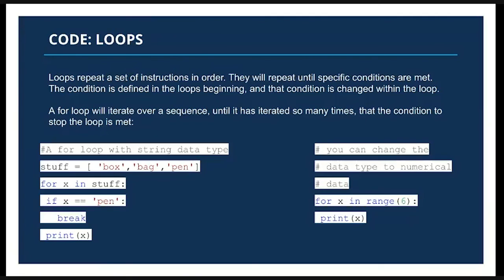That for loop will loop until the if statement breaks it. Looking at the for loop on the right-hand side, a simpler example is given where a for loop is created and the x value is in a range from 0 to 6. This x value will be printed until it exceeds the number 6, in which case the for loop will no longer be relevant and it will stop running.